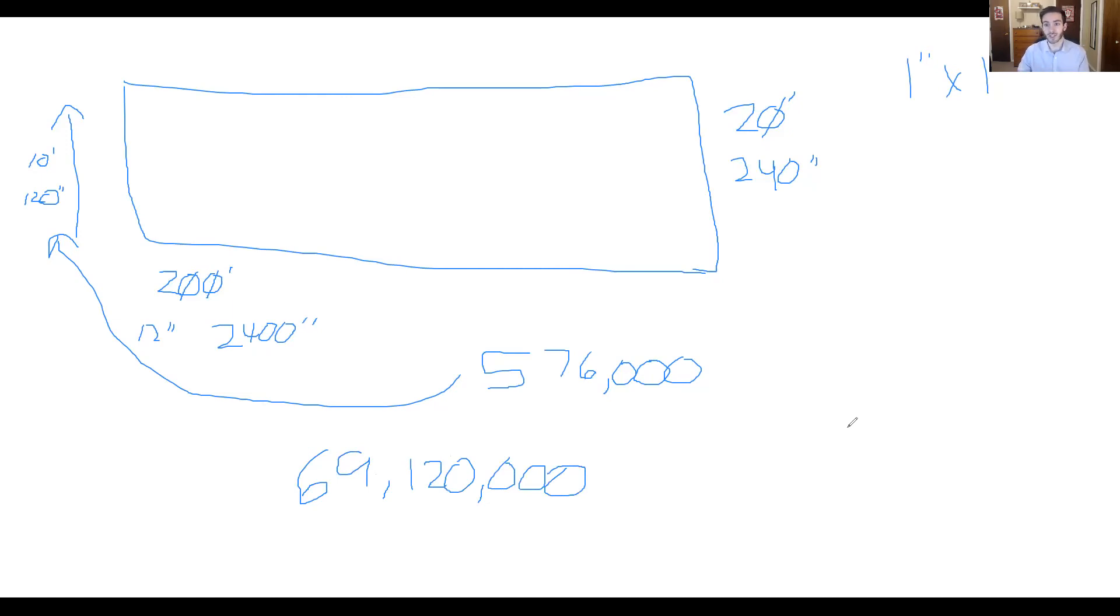From here, I've got a rough estimate of how many golf balls could fit in the airplane. I'm going to go one step further—having been in airplanes, I'll estimate that 25% of the area is taken up by seats. So I'll multiply this by 0.75, which gets us 51,840,000.